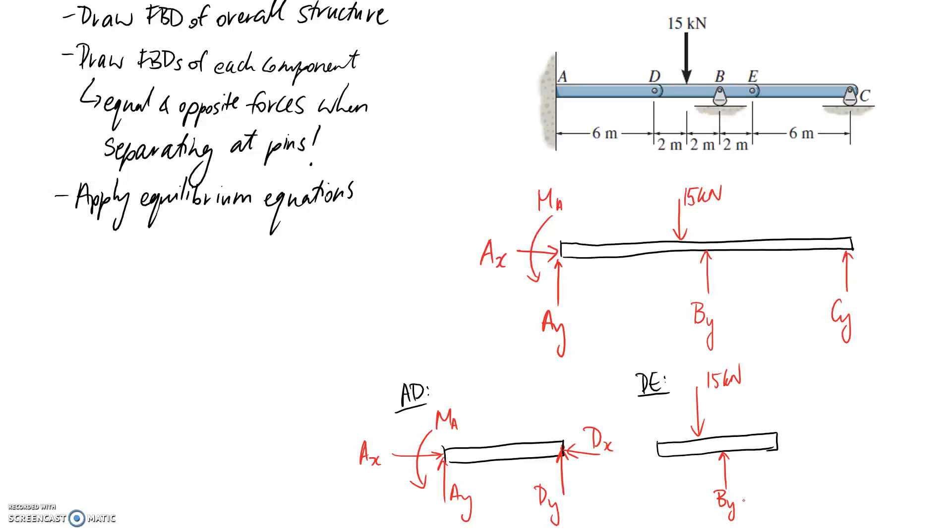And I've separated at the pin here at D. So this is where you need to consider the equal and opposite forces. So if I've assumed that the force is going to the left on that free body diagram, then it needs to go back to the right on the corresponding one. If it's going up here, it needs to go down here. So now I have equal and opposite forces at this point where I've separated at the pin.